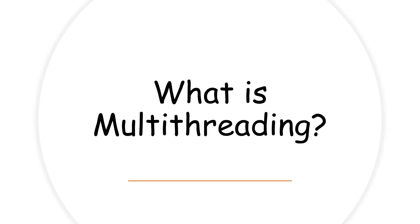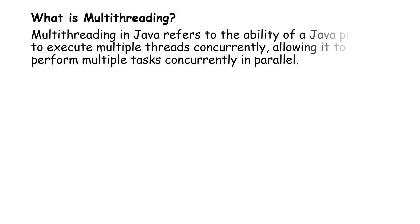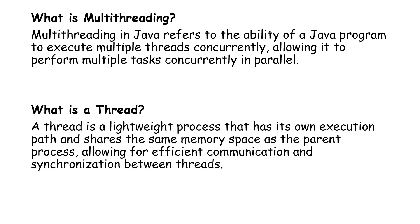Multi-threading in Java refers to the ability of a Java program to execute multiple threads concurrently, allowing it to perform multiple tasks in parallel. AV was the main thread, and he created multiple copies of himself — multiple threads — where every thread was able to perform the same task in parallel. One thread doesn't need to wait for another.